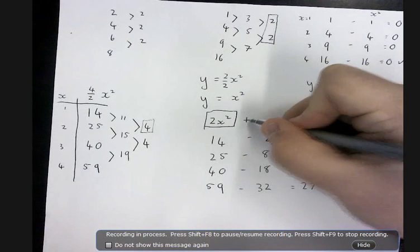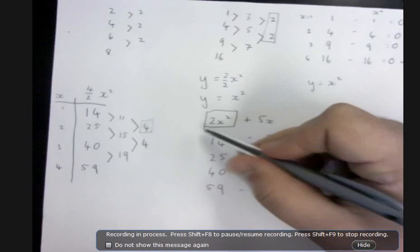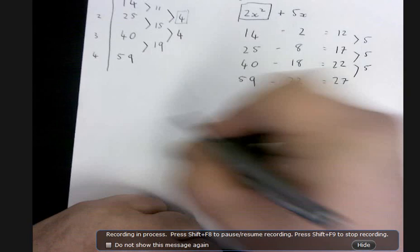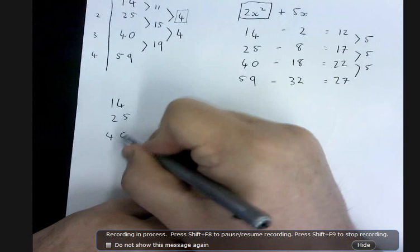5 is your difference. So, we can put plus 5x here. So, that's our rule now. Now, we've just got to see again if it's complete. So, once more. 14, 25, 40, 59.